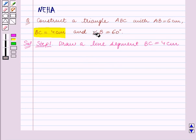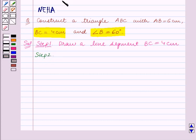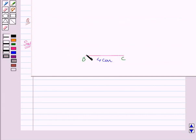It is also given to us that angle B is equal to 60 degrees, so now we will construct an angle of 60 degrees at B. Step 2 is at B construct angle CBD which is equal to 60 degrees. We have constructed this angle CBD at B which measures 60 degrees.